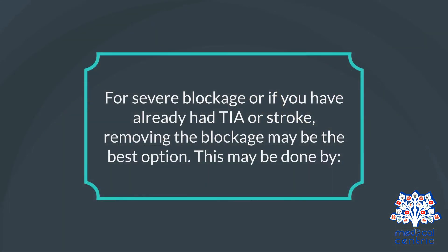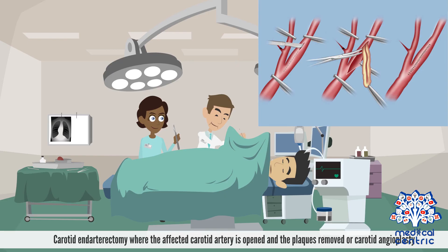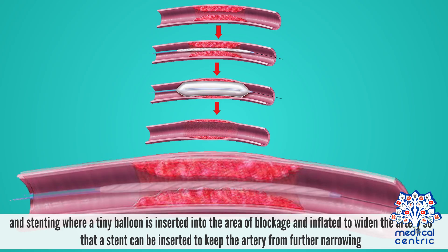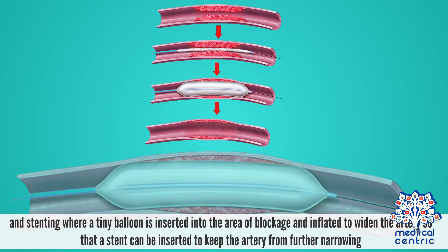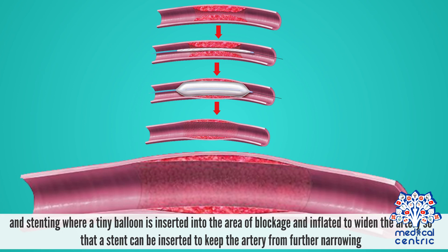For severe blockage, or if you have already had a TIA or stroke, removing the blockage may be the best option. This may be done by carotid endarterectomy, where the affected carotid artery is opened and the plaques removed, or carotid angioplasty and stenting, where a tiny balloon is inserted into the area of blockage and inflated to widen the artery so that a stent can be inserted to keep the artery from further narrowing.